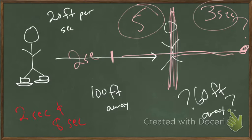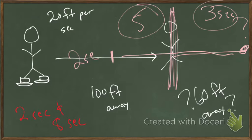The reason there are two answers is because distance isn't positive or negative — distance is just how far. That's just like absolute value being distance from zero.